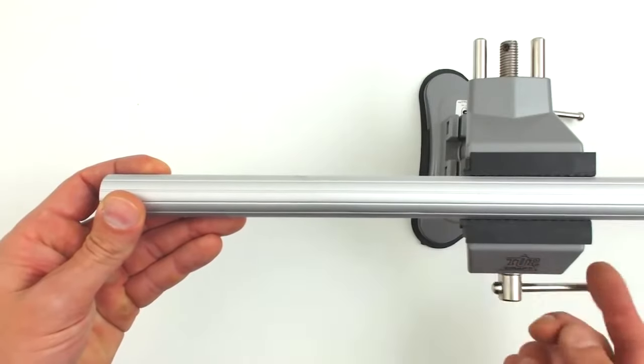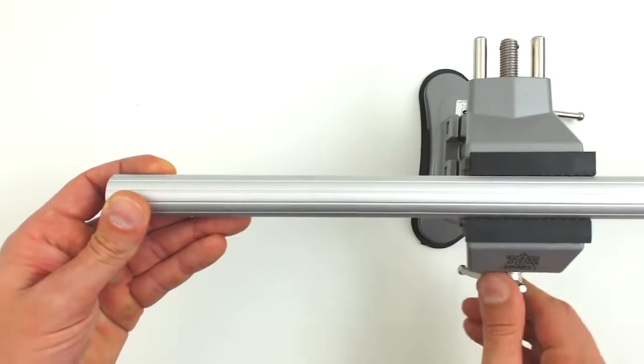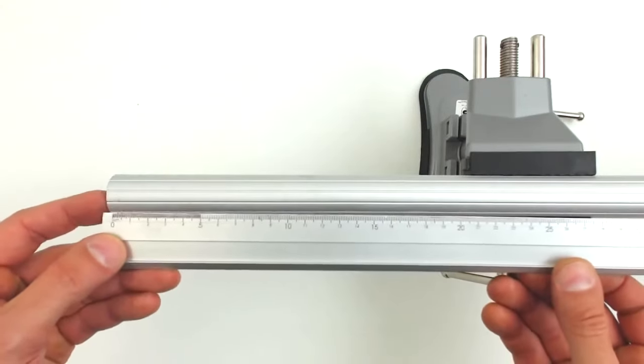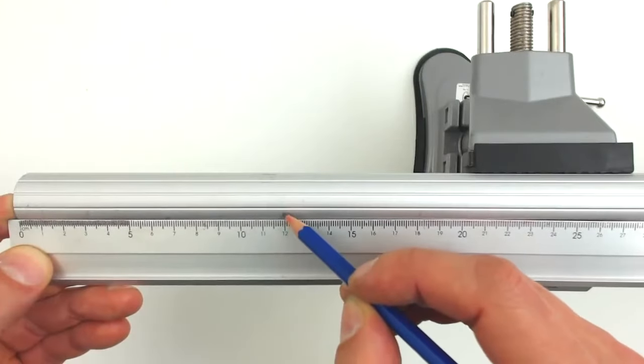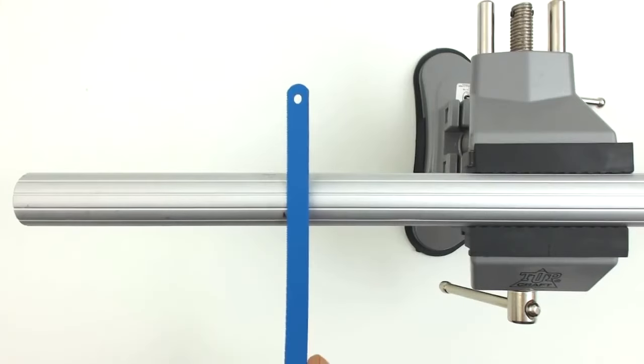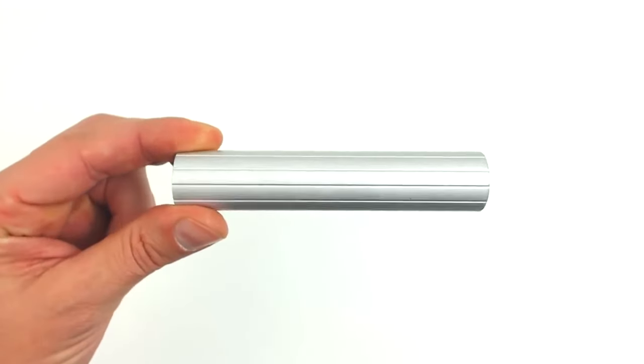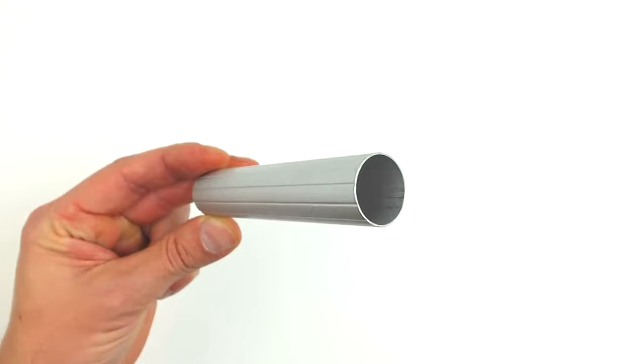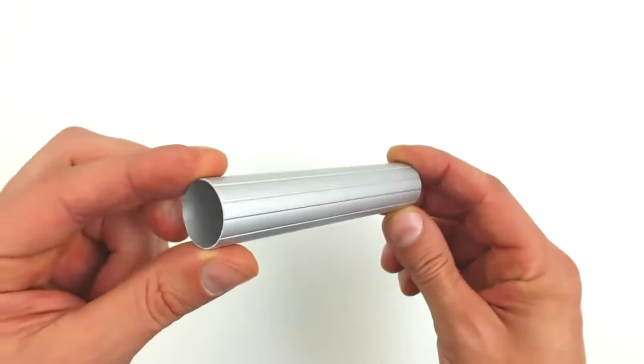Now we will measure 12 cm on the widest tube. We make a mark and then we cut with a little saw, and this is how it should look like. We are also going to sand the edges.